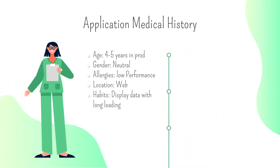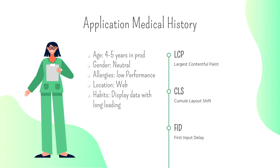Let's take a following application as an example. My web application has been deployed for four or five years in production through Supabase, Firebase, Heroku, or anything else. And because it's a web application, it has three important illnesses: the first page takes too much time to load, users have a blinking screen, and when they click on a button, nothing happens. These illnesses have huge impacts respectively on the following metrics: LCP, Largest Contentful Paint; CLS, Cumulative Layout Shift; and FID, First Input Delay.